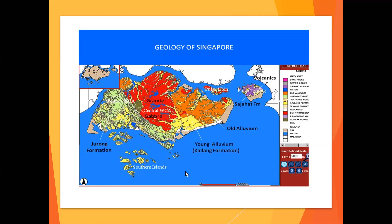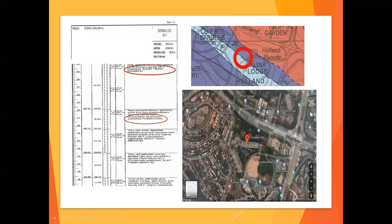I see so many SI reports where nobody bothers to do this. Let me show you why it's important. Technology is very advanced — you go to Google Maps, key in the address of the site. In this case I key in 15 Holland Hill, because there's a new project there.